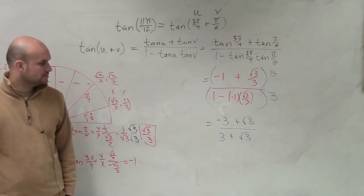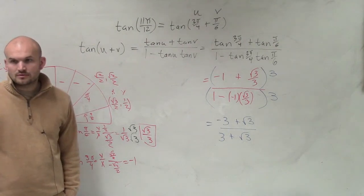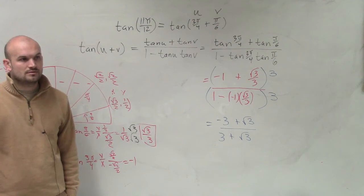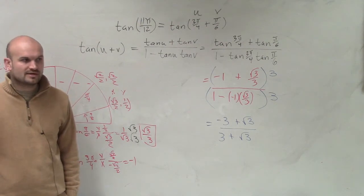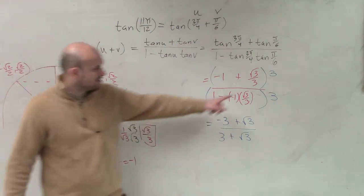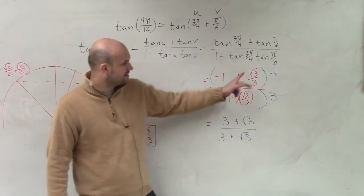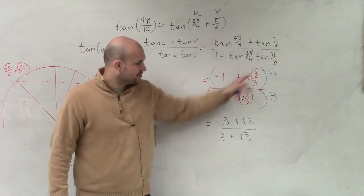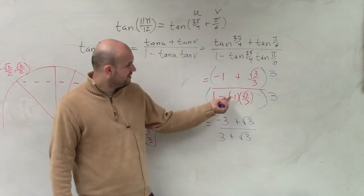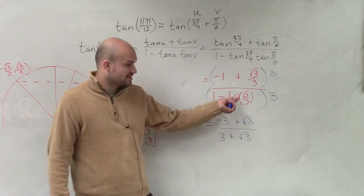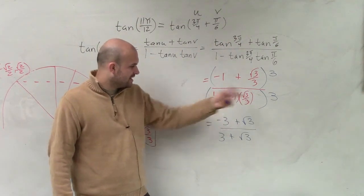Is everybody OK with how I did that? I can break it down if you want me to. But all I did is I just applied distributed property. 3 times negative 1 is negative 3. 3 times that, the 3's divide out to give you square root of 3. Here, that becomes a positive minus a negative. And then you just multiply that through.